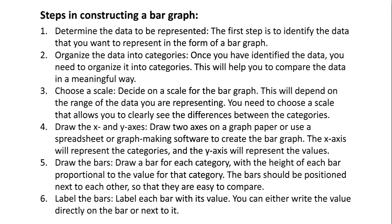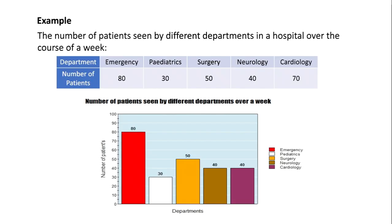Step five: draw the bars. Draw a bar for each category with the height of each bar proportional to the value for that category. The bars should be positioned next to each other so that they are easy to compare. Step six: label the bars. Label each bar with its value — you can either write the value directly on the bar or next to it.